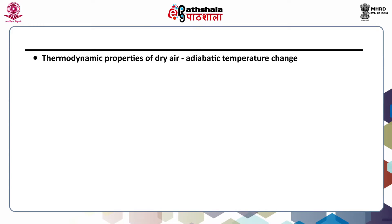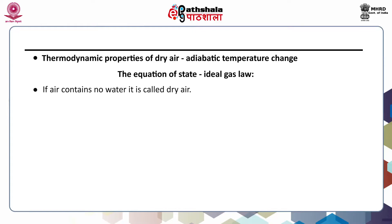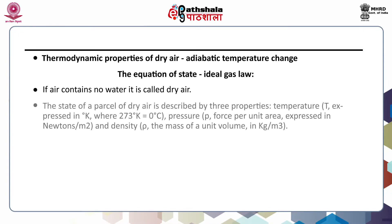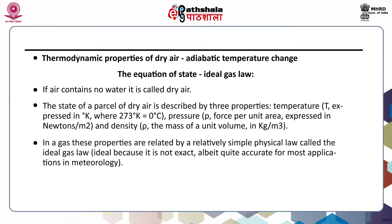The thermodynamic properties of dry air: the adiabatic temperature change and the equation of state — the ideal gas law. If air contains no water, it is called dry air. The state of a parcel of dry air is described by three properties: temperature T in degrees Kelvin (where 273 K equals 0°C), pressure P in Newton per meter square, and density rho in kilogram per cubic meter. These properties are related by the ideal gas law, P = rho × R × T, where R is the gas constant. It is not exact but quite accurate for most meteorological applications.